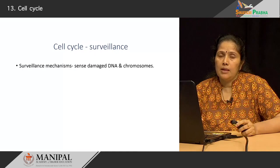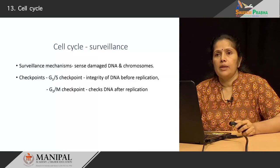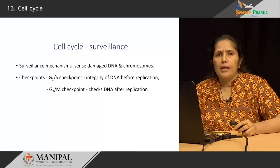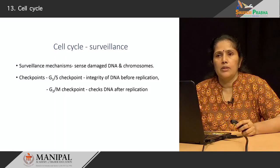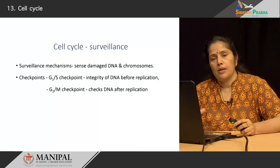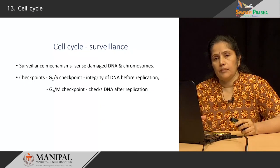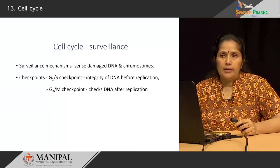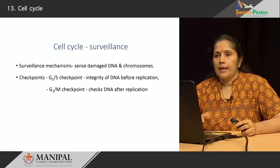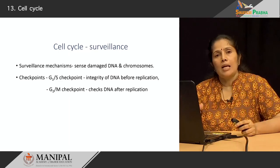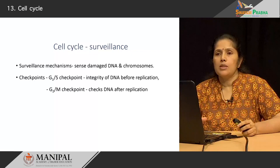The new cell being formed must be normal, so surveillance of the cell cycle is very important. There are two critical checkpoints: the G1-S checkpoint and the G2-M checkpoint. The G1-S checkpoint looks for the integrity of the DNA before replication — just before replication occurs, it checks that DNA integrity is maintained. The second checkpoint occurs after DNA replication at the G2-M checkpoint. So there is one checkpoint before replication and one after replication.